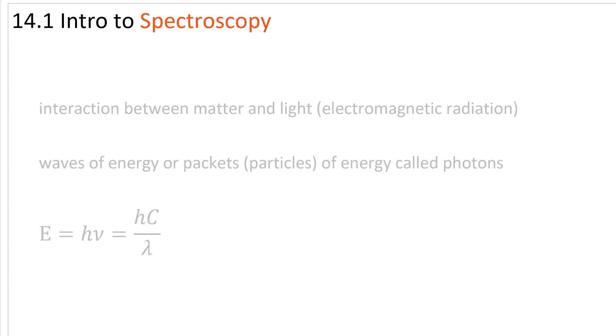Introduction to Spectroscopy. Spectroscopy is based on the interaction between matter, say a sample of a molecule that you have and you want to analyze, and light, which is electromagnetic radiation.